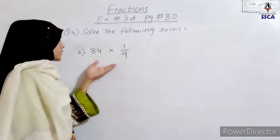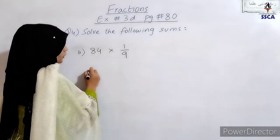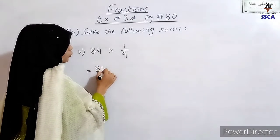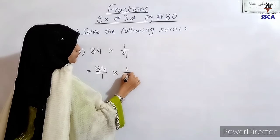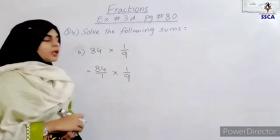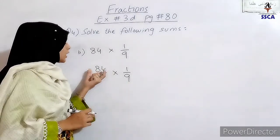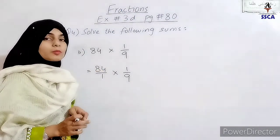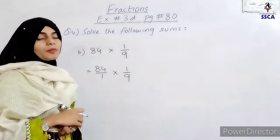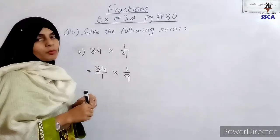Part B: we have a sum given — 84 multiplied by 1 over 9. To solve it, first write 84 as a fraction: 84 over 1, multiplied by 1 over 9. Now we start cancellation with 9 and 84. Using the divisibility rule for 3: if we add the digits of 84, we get 8 plus 4 equals 12, which is divisible by 3. So the common factor of 9 and 84 is 3. Cancel 3.